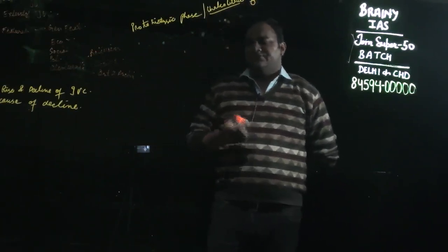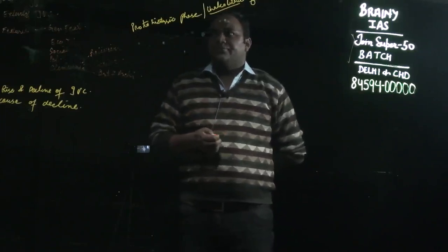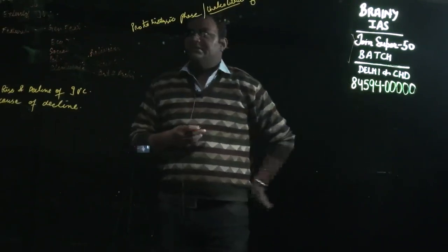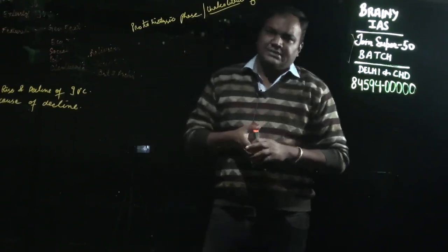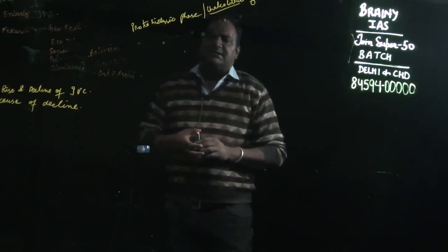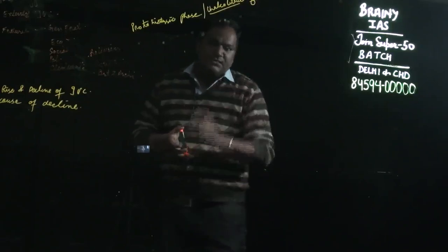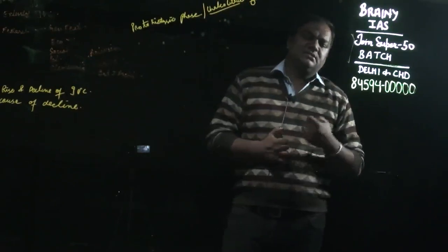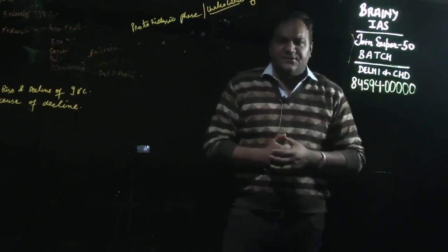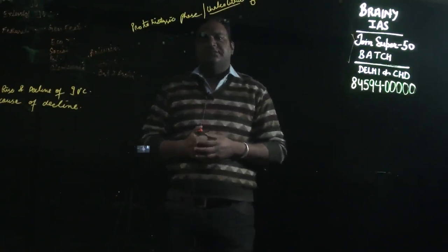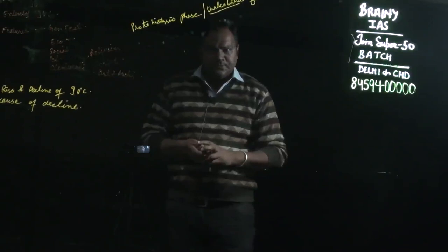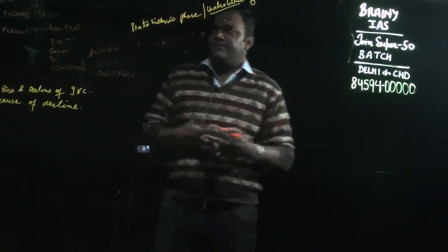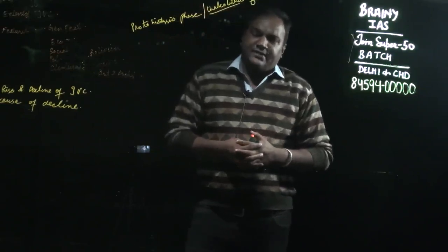The Indus Valley Civilization was discovered through two sites: Harappa and Mohenjo-daro. The Harappa site was discovered in the year 1920–1921 by Dayaram Sahni, whereas Mohenjo-daro was discovered by R.D. Banerji. Harappa is a type site located on the banks of river Ravi. The first site discovered is called a type site, and the name of this type site is given to the entire excavation — so the Indus Valley Civilization can also be called the Harappan Civilization.